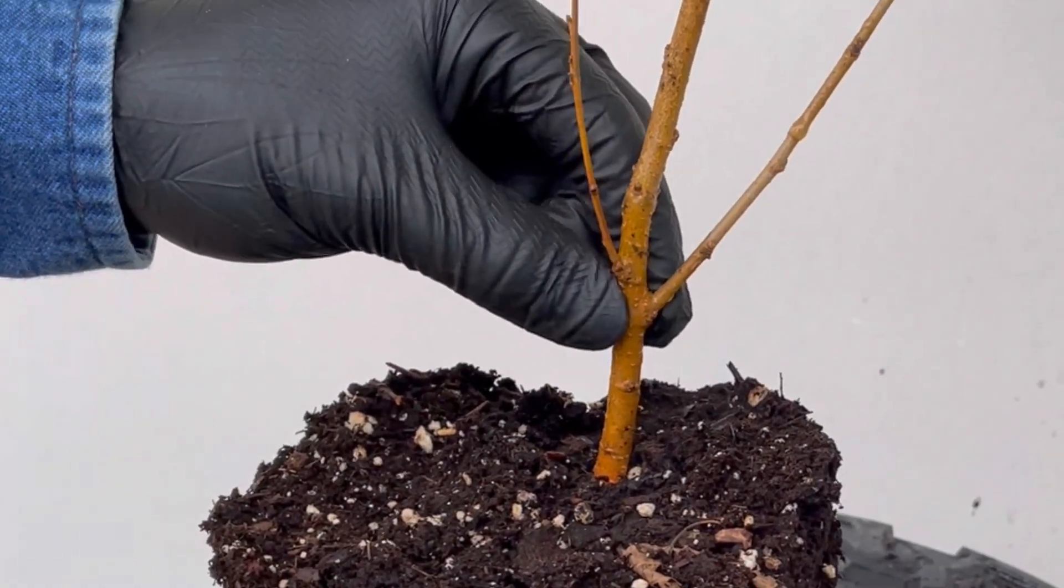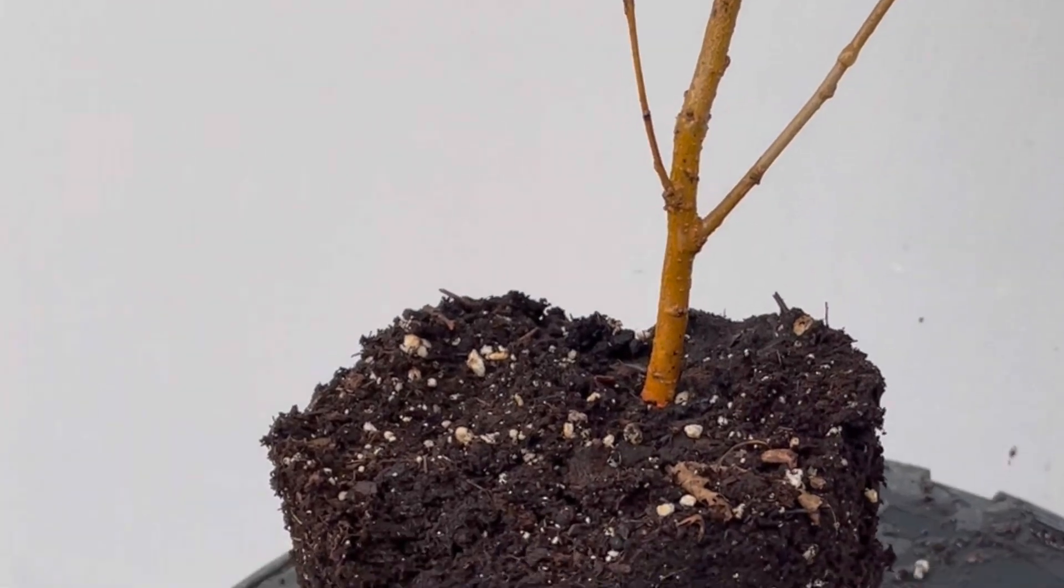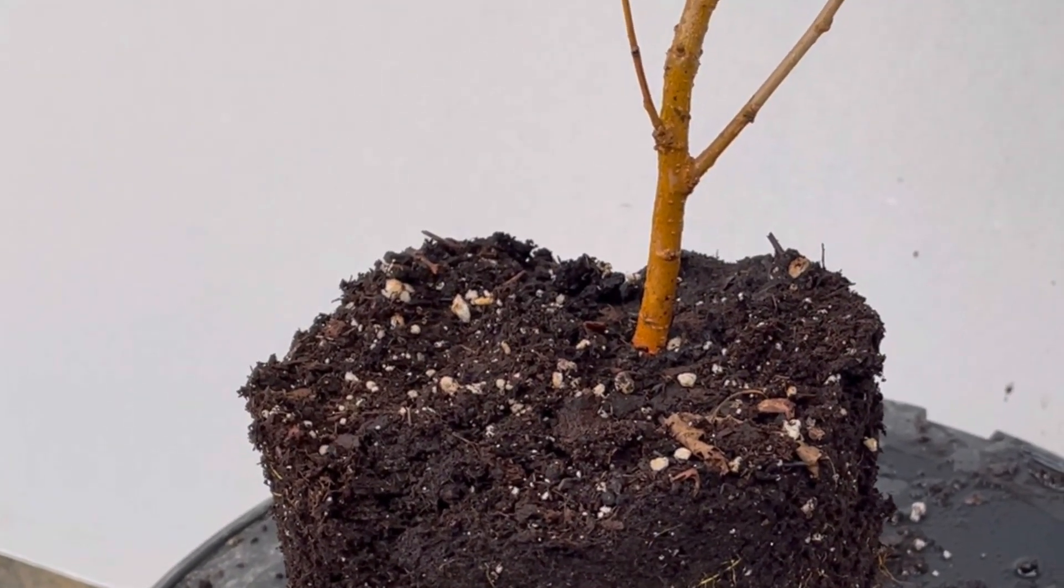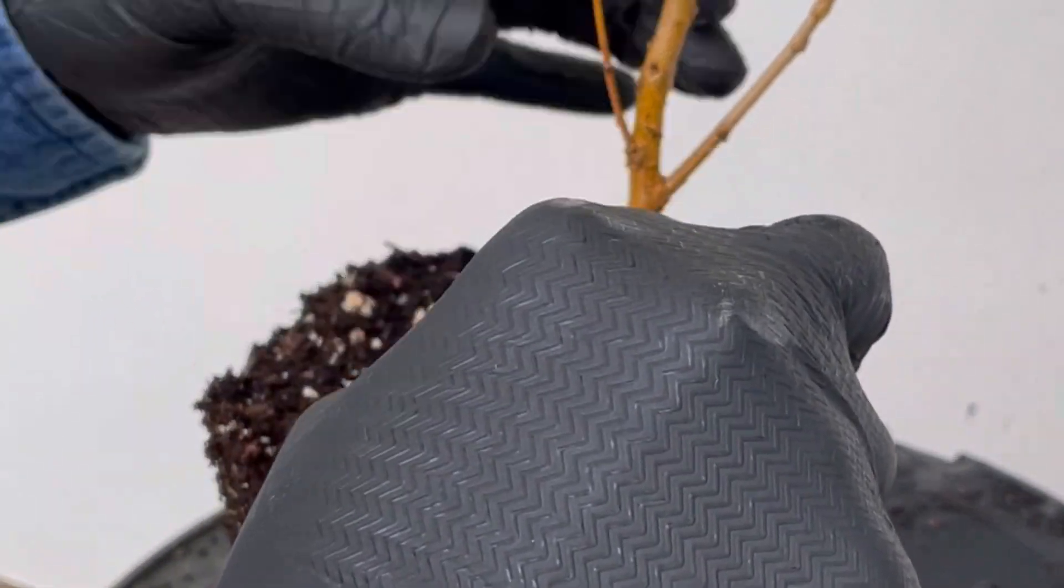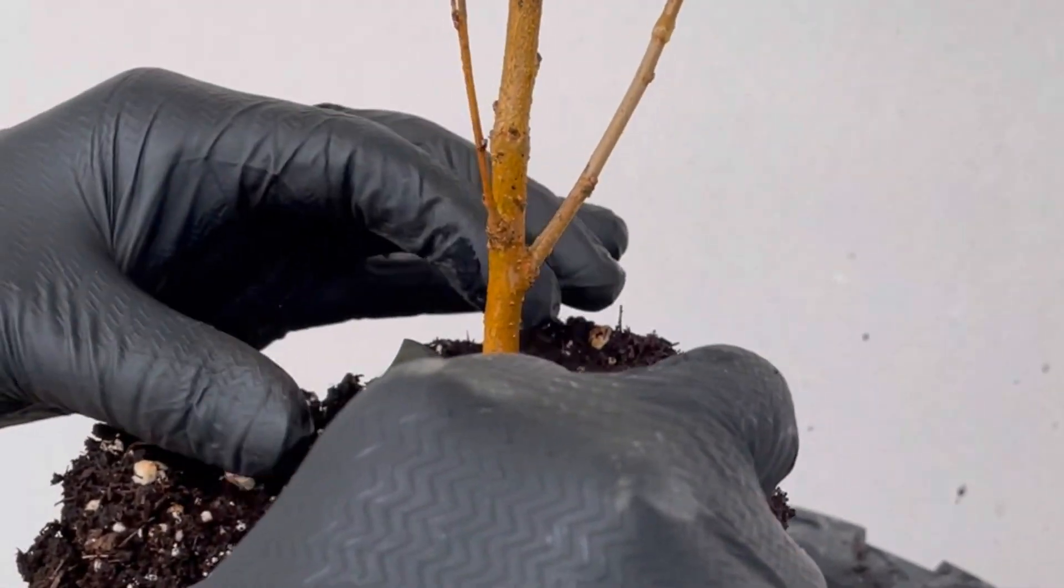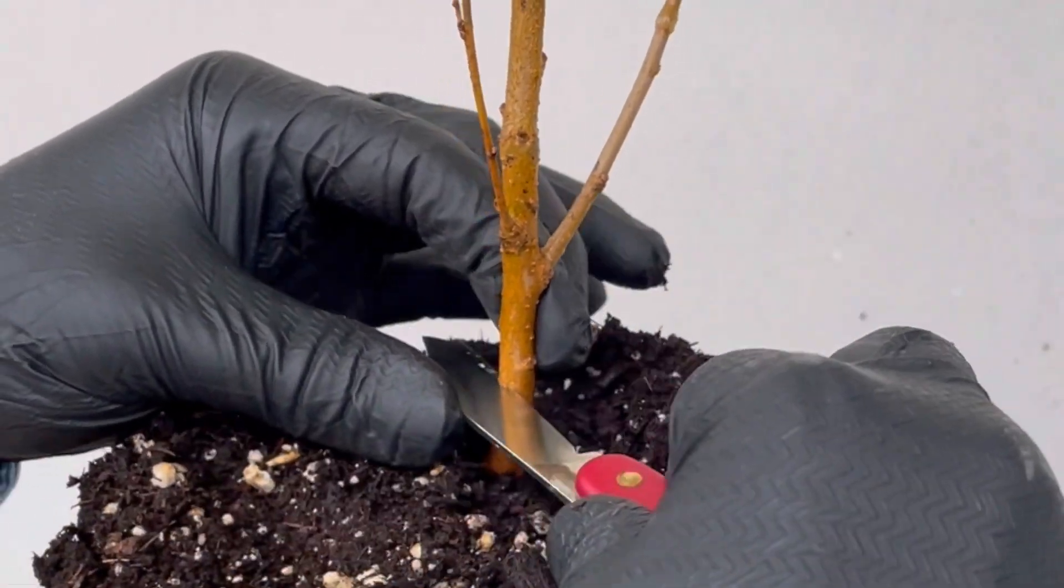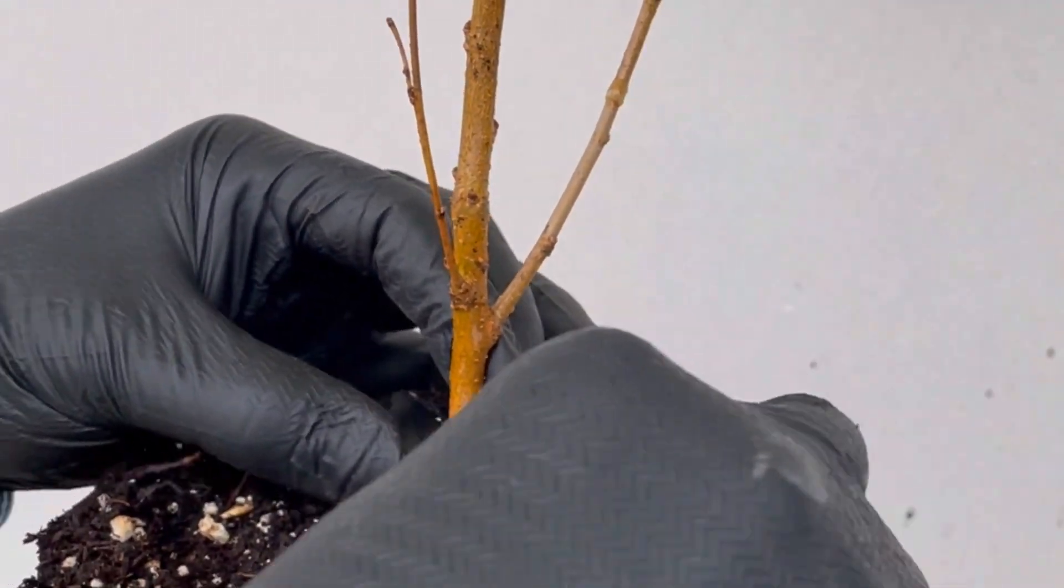This is a pretty small diameter to try and do the inverted T bud, but we're going to give it a shot and see what happens. Let's go as low as we can here. There we go. I'll go halfway around.